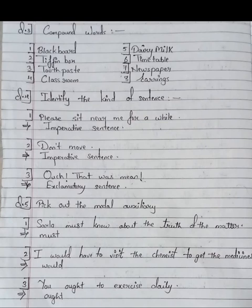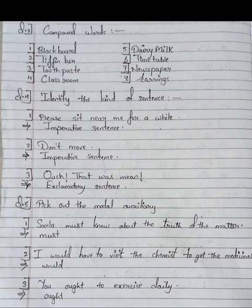Let's move on to our next topic: kinds of sentences. Children, kinds of sentences are of four types — assertive (also called declarative), imperative, interrogative, and exclamatory. Assertive means a simple sentence, for example: 'Ram and Shyam went to the market.' Imperative is where we give an order or make a request, such as: 'Sit down,' 'Don't get up,' 'Keep quiet' — these are orders. 'Will you give me your water?' or 'May I go to the toilet?' — these are requests or permissions. So when you give an order or make a request, that is known as an imperative sentence.